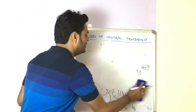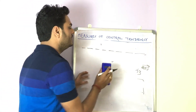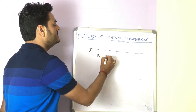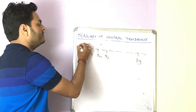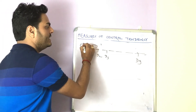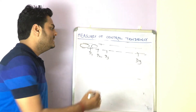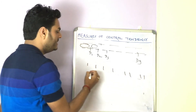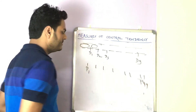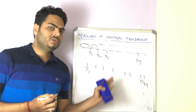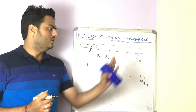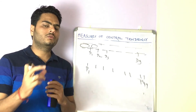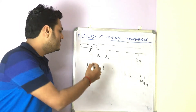Deciles cut your data into 10 equal parts — D1 through D9. And percentiles divide your data into 100 buckets — P1 through P99. These are all positional values in the world of statistics that divide your data into equal parts. All these concepts are extremely important when you do exploration of the data before training your machine learning model.